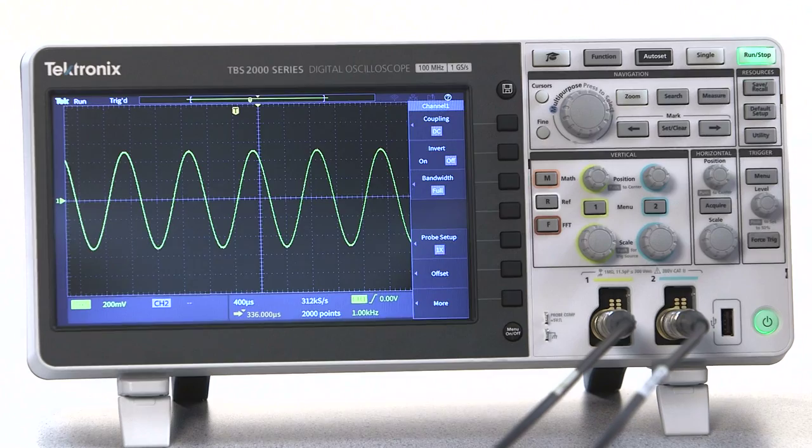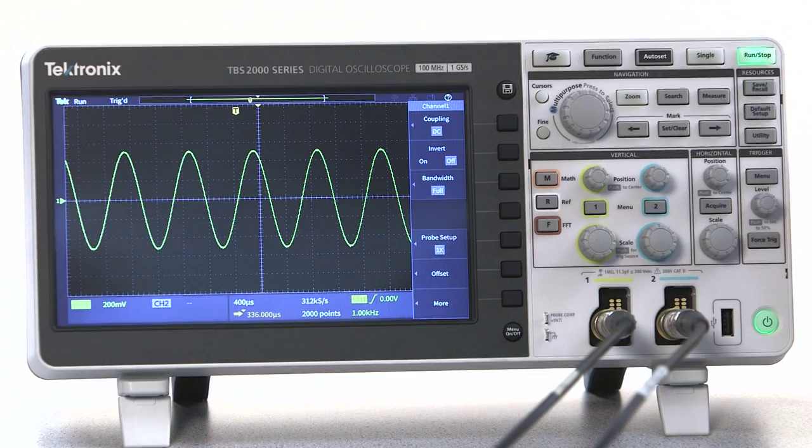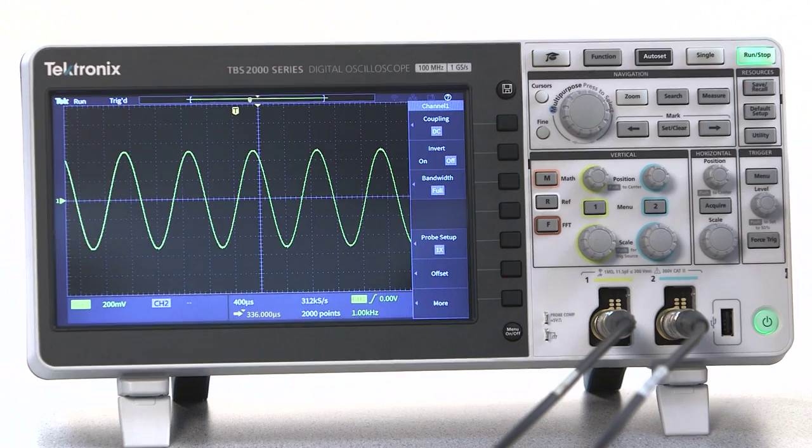This lets you look at signals with different frequencies or focus your attention on signal details. For example, a square wave might look like it's making a perfect instantaneous transition. However, if you speed up the horizontal scale, you'll see that the transition takes a measurable amount of time.